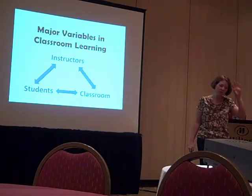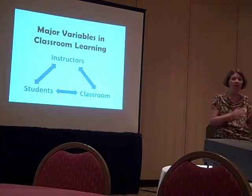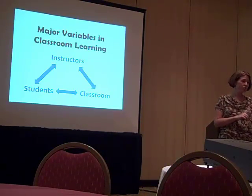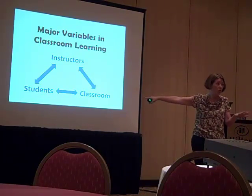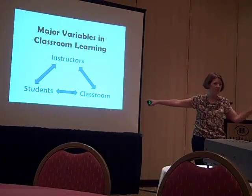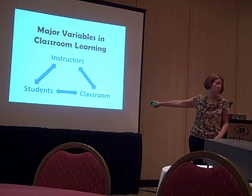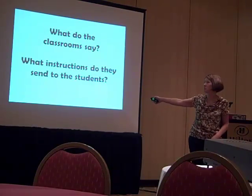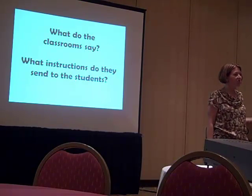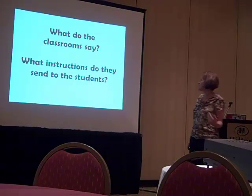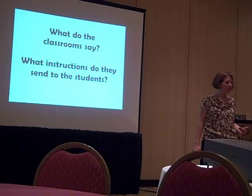I think there are three major variables in what happens in classroom learning — not online, but just classroom learning. Those are the instructors and all sorts of variables related to them; the students, which we all know is a very important variable, although the media likes to ignore that completely; and also the classroom, which is the most ignored variable, but is huge in what happens in classroom learning. I'm going to show you some pictures of classrooms and ask what these classrooms say, both to the instructor and to the students when they walk into the room.